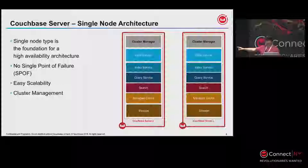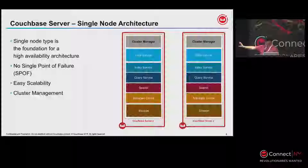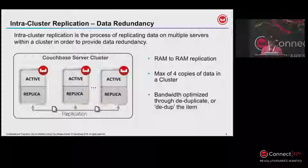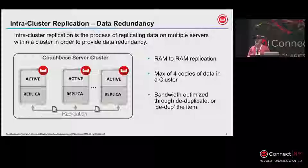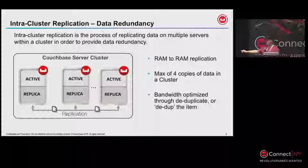There's a managed cache built in whenever you're talking to data. Search, query, index, and data are the main services you'd choose for nodes. In a two-node cluster, for high availability there's replication happening — memory-to-memory replication — and you can have multiple copies of data for HA capability within a cluster. That's about redundancy: being able to store data so that if something fails, the data is available in the next few seconds for the application to continue reading and writing. It's bandwidth-optimized, sending only changed data.